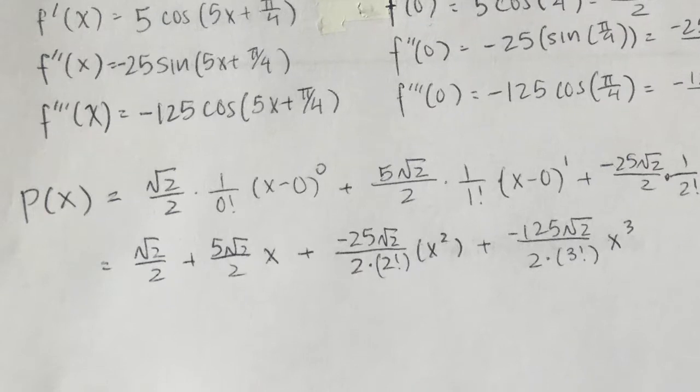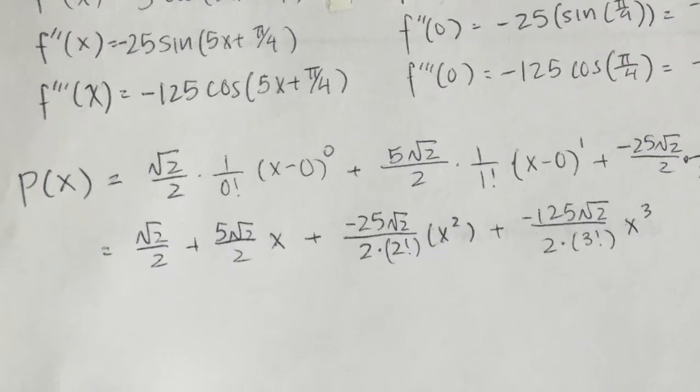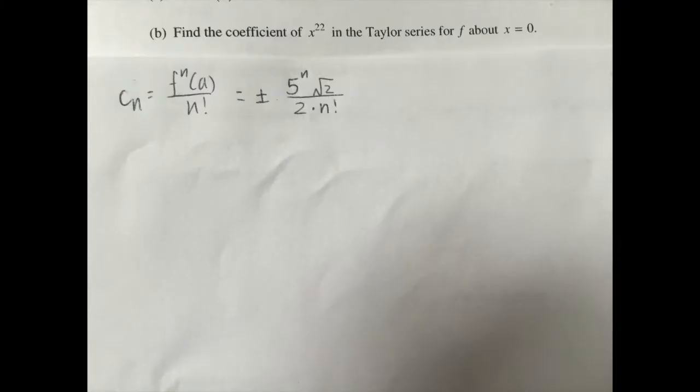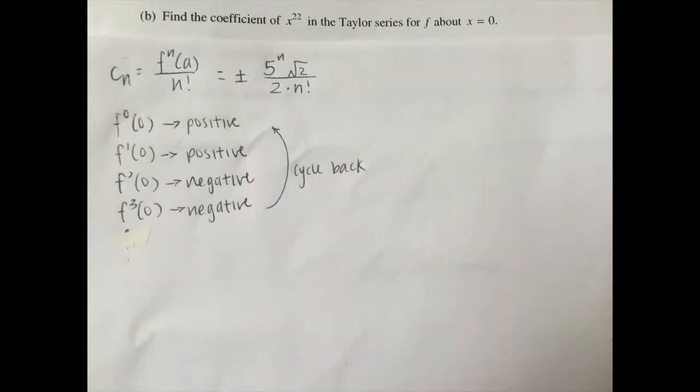You will be deducted for any extra terms, so make sure you know how many terms are needed. Part B asks, find the coefficient of x to the power of 22 in the Taylor series for f about x equals 0. Using part A, you would find that the general constant c of n equals positive or negative 5 to the power of n times square root of 2 over 2 times n factorial. To find the sign of a constant, you would look for a pattern.